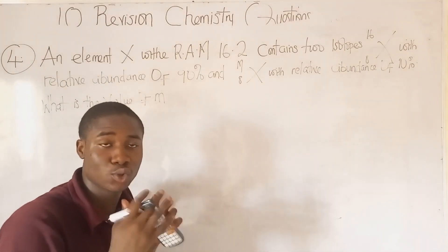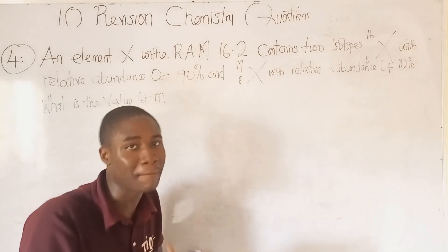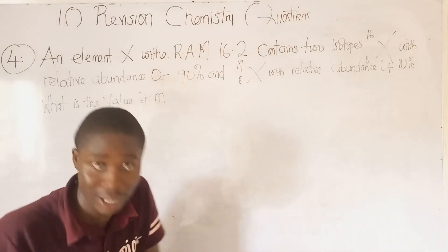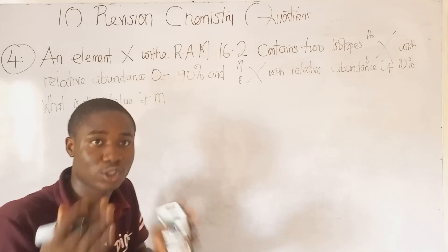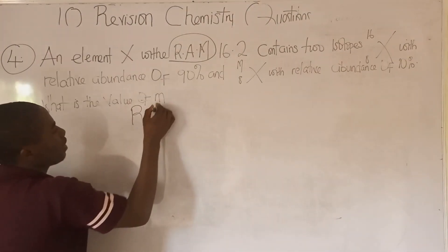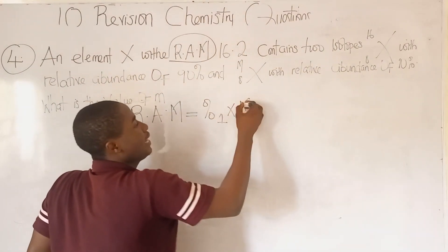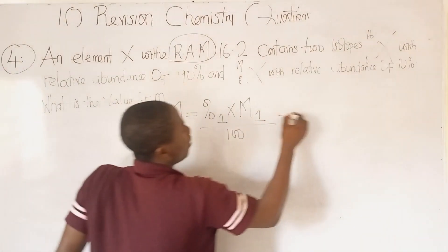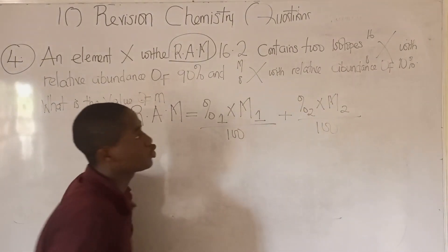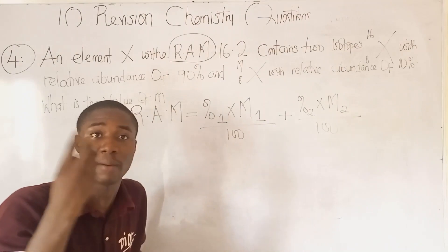Moving over to question number 4. Question number 4 is on the topic of isotopy and relative atomic mass calculations. We already have video lessons on this particular topic — do well to go check those out to understand step by step how this concept works. This question is on relative atomic mass, and solving it uses a formula.